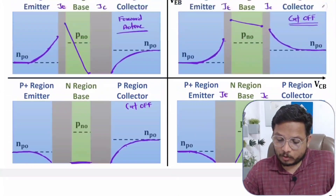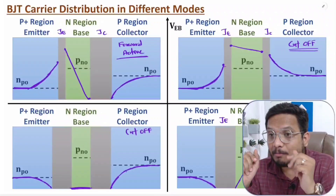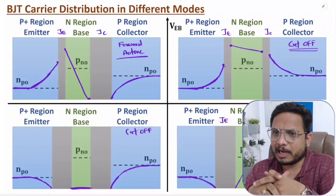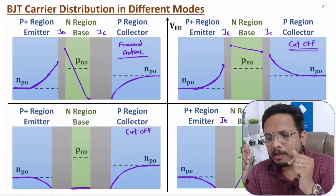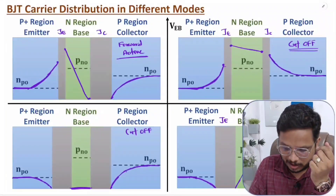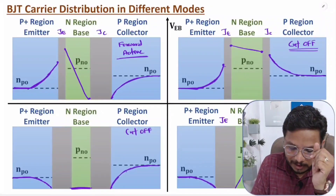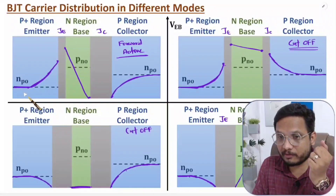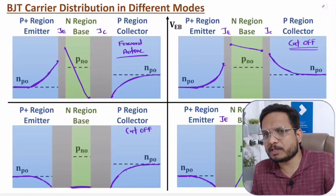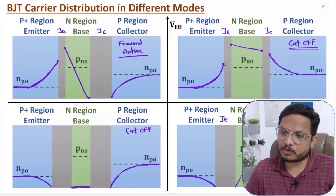There are four modes of operation and we can understand minority carrier distribution for each. Such questions also appear in competitive examinations. The key rules to remember are: in forward bias, minority carrier concentration increases nearer to the junction; in reverse bias, it decreases nearer to the junction. Also, higher doping concentration means lower minority carrier concentration, and lower doping means higher minority concentration. Based on these fundamentals, you can easily solve questions on BJT carrier distribution. Thank you so much for watching this video.